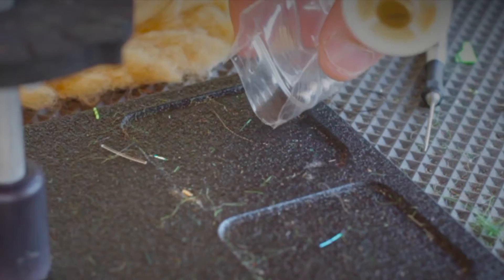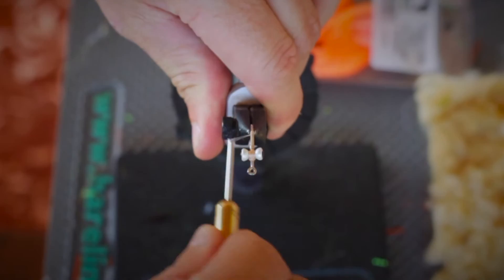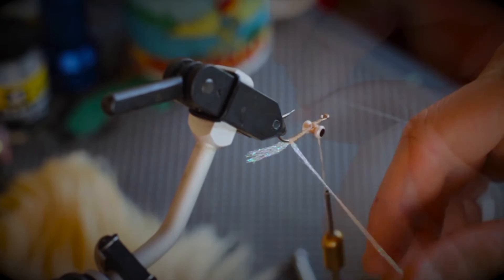Next we're going to bring the thread all the way back to the bend, go ahead and attach our flat diamond braid, and then palmer that around the hook shank all the way up in front of the eyes.